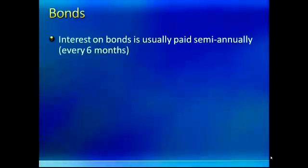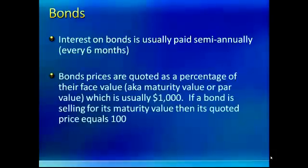Interest on bonds can be quarterly, but generally it's semi-annual — every six months. Bond prices, when you look at the Wall Street Journal, are quoted as a percentage of their face value, which is also the maturity value or par value. Normally bonds are issued in $1,000 denominations, so if you wanted to buy $10,000 worth of bonds from GM, you'd buy ten $1,000 bonds from them.